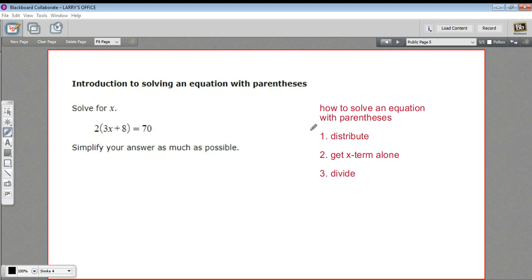Let me show you how this works. So step one, we need to distribute. We've got a 2 outside of this parentheses. That means the 2 gets multiplied by each of the things inside the parentheses. So 2 times 3x, well 2 times 3 is 6, so that's 6x. And 2 times 8 is 16. And then we have equal 70. All right, so we've done the distribution.